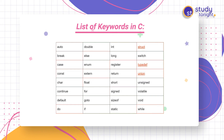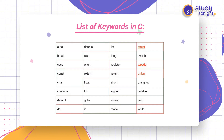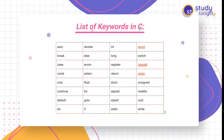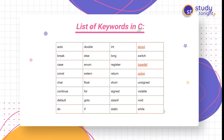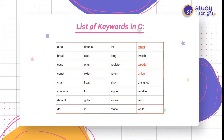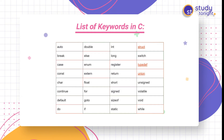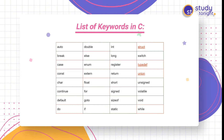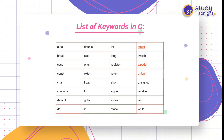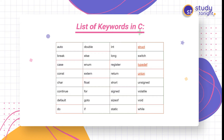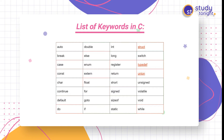These are the 32 keywords in the C language: auto, break, case, const, char, continue, default, do, double, else, enum, extern, float, for, goto, if, int, long, register, return, short, signed, sizeof, static, struct, switch, typedef, union, unsigned, volatile, void, and while. These keywords have different meanings according to their names and we'll discuss them later on.